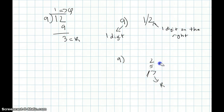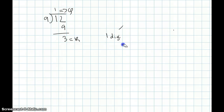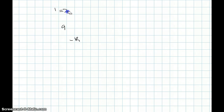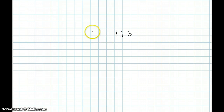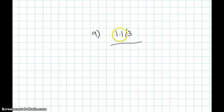Now let me move on to dividends that have three digits. For example, 113. In 113, we first split this keeping the right-hand side only one digit. We take this left-hand digit and put it here — so if that digit was one, we put one here.